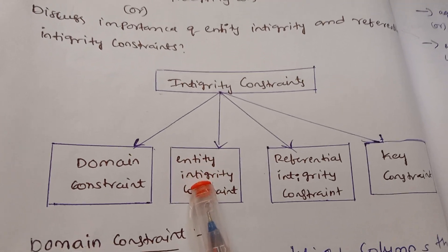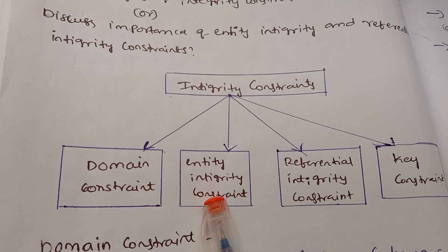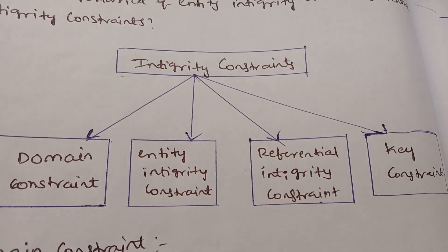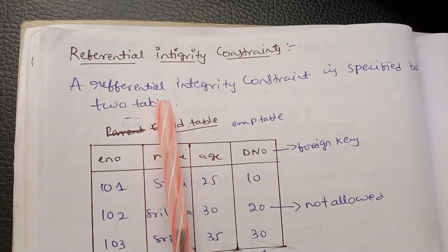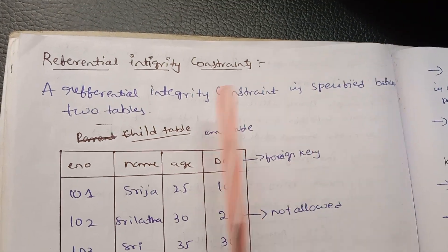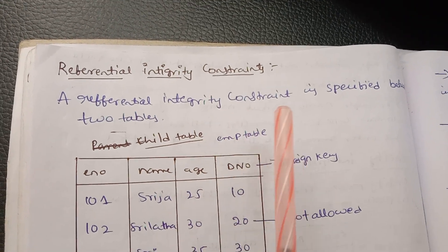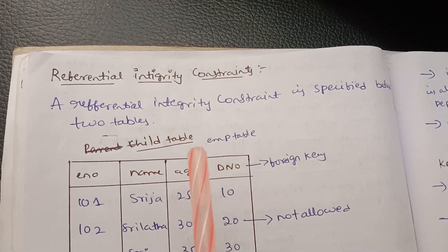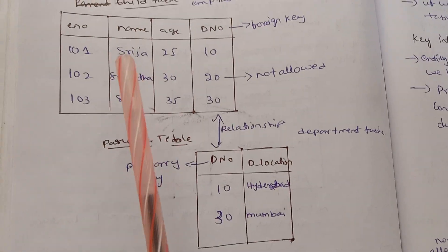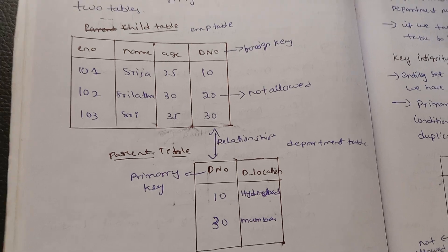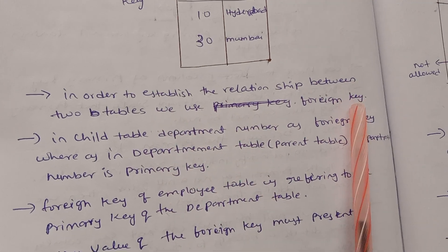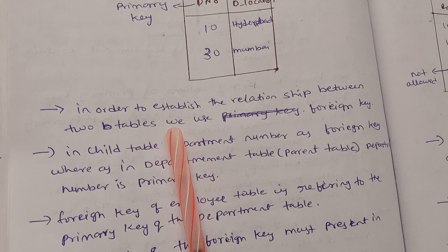Now we have Referential Integrity Constraints. Referential Integrity Constraints are specified between two tables. In order to establish the relationship between two tables, we use the foreign key.